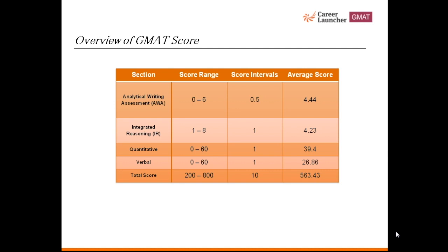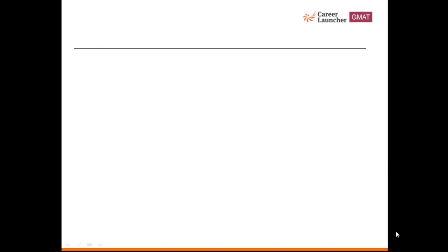Average score in this section is 563.43. Now let's take a look at these sections individually and see what factors come into play when they are scored. Your scores in quant and verbal sections depend primarily on four factors.